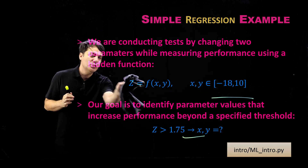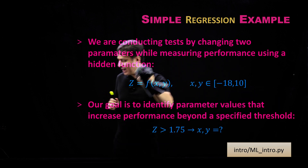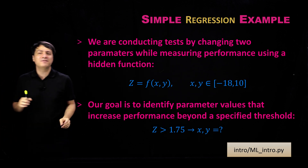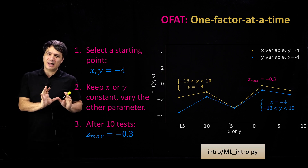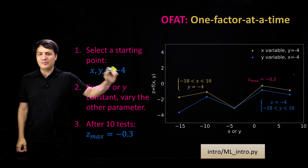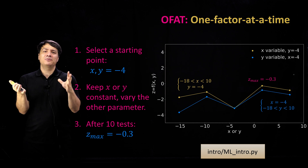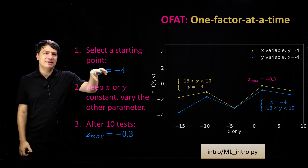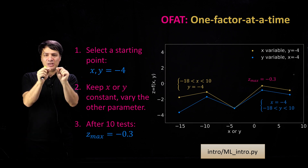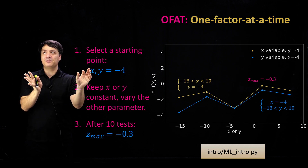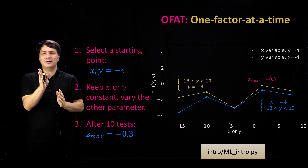The first approach, which you might have tried yourself but perhaps don't know the name of, is called one factor at a time, or OFAT. It's a very simple approach: you have several parameters that are varying, and you define a center point. In this case, let's set x and y to minus 4, in the middle of the minus 18 to 10 domain. You keep all the parameters constant — in this case, keep x constant and vary y — or keep the other parameters constant and vary the other, one factor at a time.